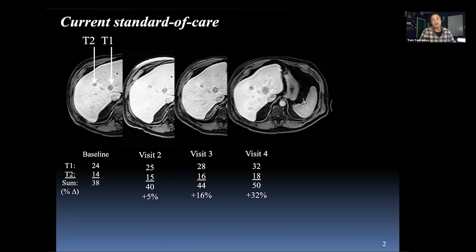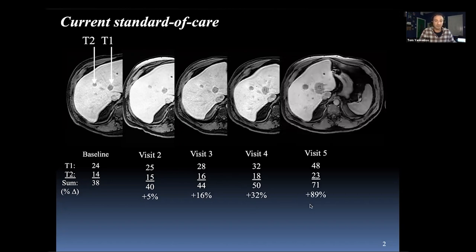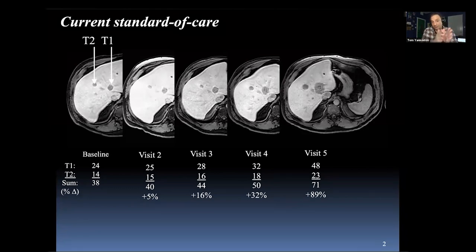At visit 4, we've now crossed the 20% threshold — it's a 32% increase. At visit 5, things are not looking good at all, with almost a 90% increase. This is what's done within the clinical trial setting, and it's called RECIST criteria — the Response Evaluation Criteria in Solid Tumors.